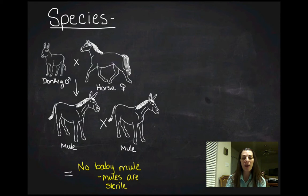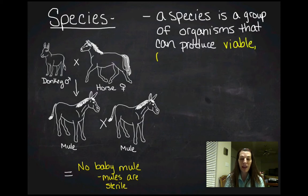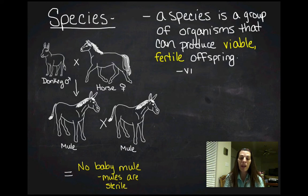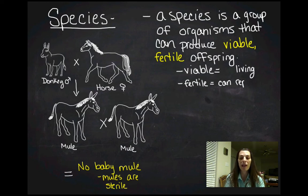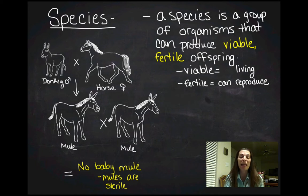Here's the biological definition of a species: a species is a group of organisms that can produce viable, fertile offspring. Viable means living, and fertile means can reproduce. When we're talking about biological species, we're typically talking about a group of organisms that can produce viable, fertile offspring in nature.